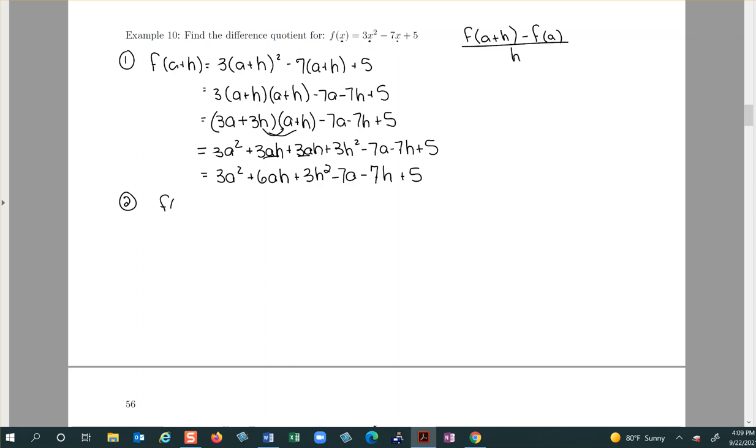Step two, the answer you find f of a, way easier step. Three a squared minus seven a plus five, all you're doing is putting a's in for those x's.